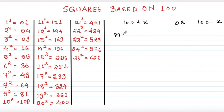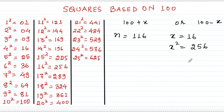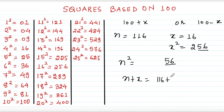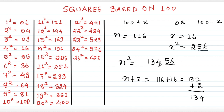Let me take another example where x is such that x² is a three-digit number. I take 116; x equals 16, so x² equals 256. Since x² is a three-digit number and we take only the last two digits, the third digit becomes a carry over. So the last two digits of n² are 56. Then n plus x gives 116 plus 16 equals 132, and adding the carry of 2 gives 134. So 116² equals 13456.